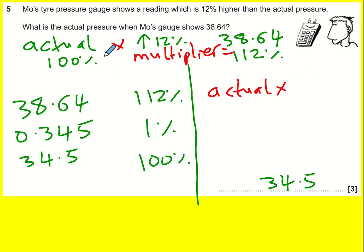For us we've got the actual times our multiplier. If we've got 100% and we're going up by 12%, again that's 112%, and so our multiplier is 1.12 and that equals our 38.64. So to work out the actual we can do 38.64 divided by 1.12 which is again this answer.